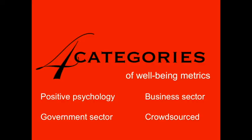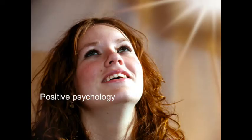Now we're going to look at some of the different ways that well-being is being measured. This comes right out of the document we wrote — the State of Well-Being Metrics — for that IEEE committee. We're going to look at four different categories: positive psychology, the government and non-governmental sector, the business sector, and what we're calling crowdsourced. We'll build on these for our document for the IEEE P7010 project.